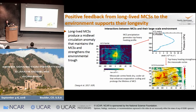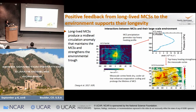What this vortex does is essentially transport drier and colder air into the MCSs, which could cause evaporation of raindrops and therefore formation of the cold pool and gravity waves. We believe this is one mechanism why MCSs can last that long — it changes the circulation, providing a positive feedback that enhances their longevity.